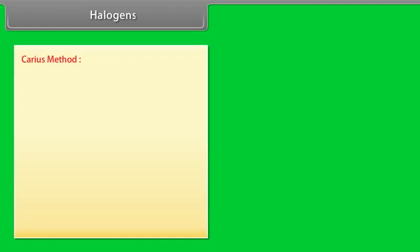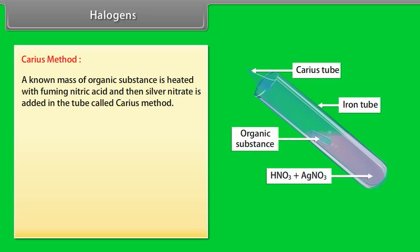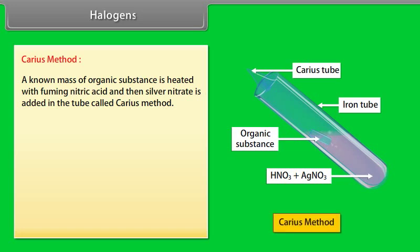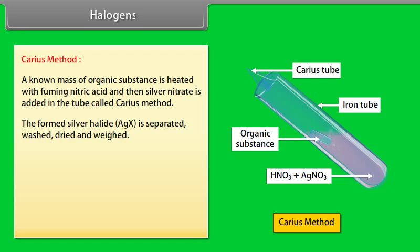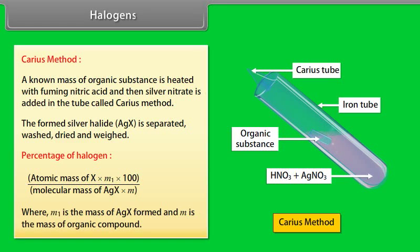Halogens — Carius method: a known mass of organic substance is heated with fuming nitric acid and silver nitrate is added in a tube. The formed silver halide is separated, washed, dried, and weighed. Percentage of halogen = (atomic mass of X × M₁ × 100) ÷ (molecular mass of AgX × M), where M₁ is the mass of AgX formed and M is the mass of the organic compound.